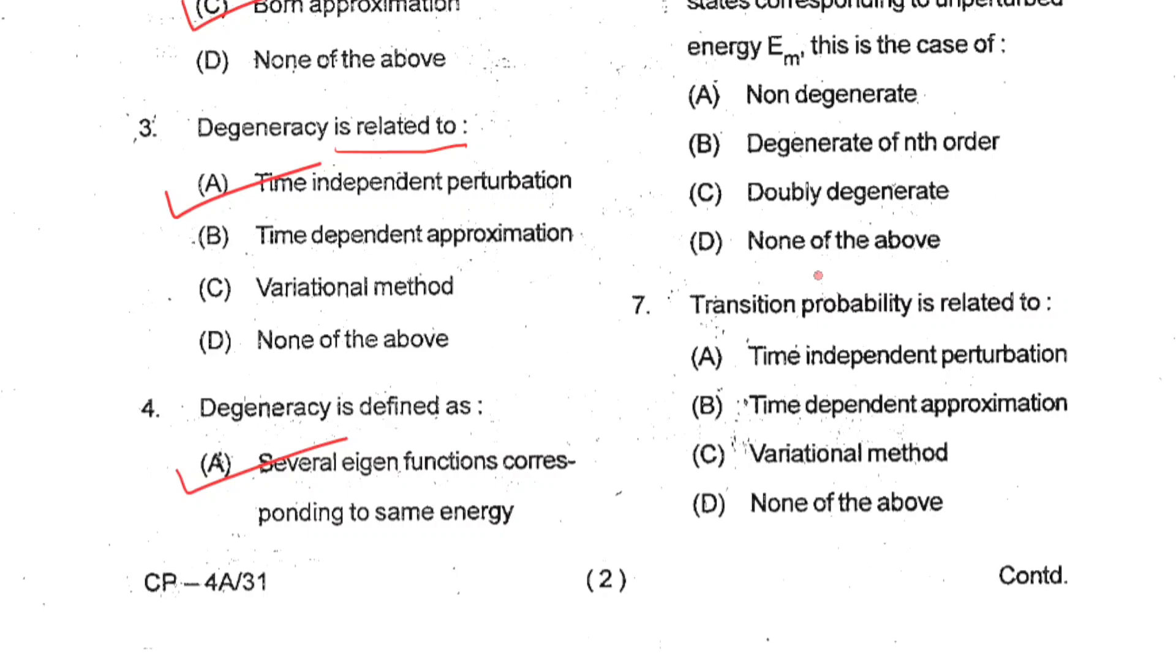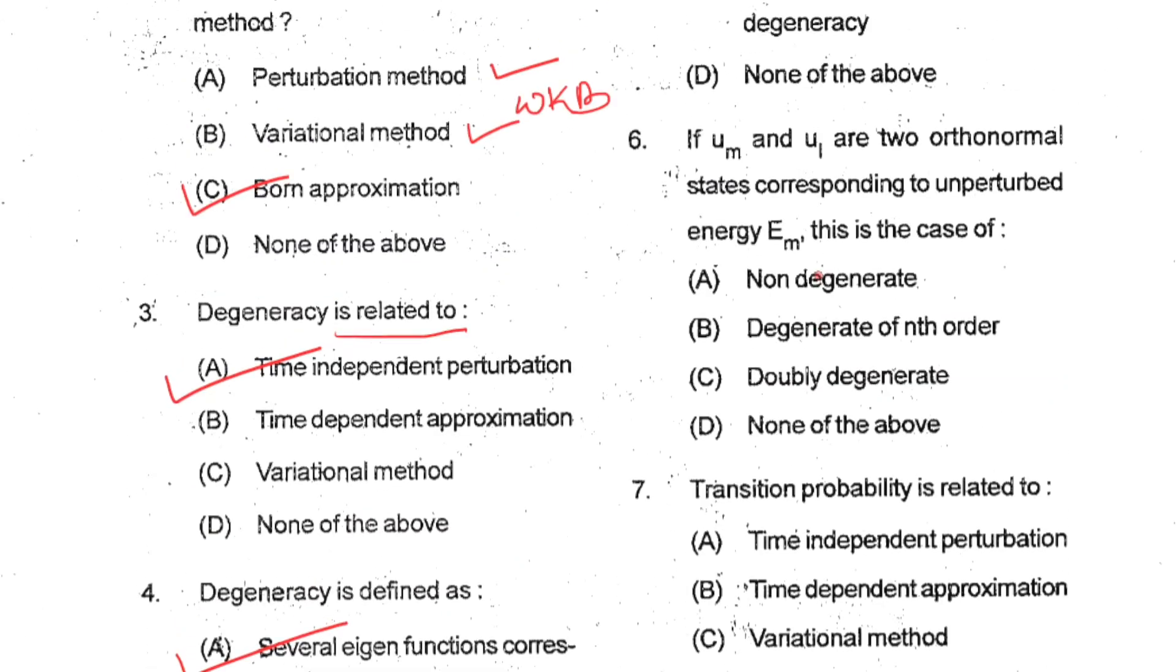Question number six: If UM and UL are two orthonormal states corresponding to unperturbed energy EN, this is the case of doubly degenerate. So C is your correct option.